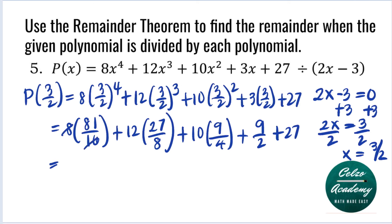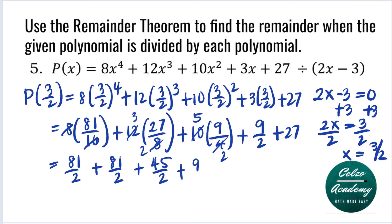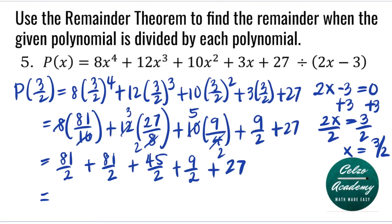Simplifying: 3 to the fourth is 81 and 2 to the fourth is 16, so 8 over 16 is one-half, giving 81 over 2. 3 to the third is 27 and 2 to the third is 8, so 12 over 8 reduces to 3 over 2, giving 81 over 2. 3 squared is 9 and 2 squared is 4, so 10 over 4 reduces to 5 over 2, giving 45 over 2. Plus 9 over 2, plus 27. Adding the fractions: 81 plus 81 plus 45 plus 9 equals 216, divided by 2 is 108. 108 plus 27 is 135. So P of 3 over 2 is 135, and this is the remainder when P of X is divided by 2X minus 3.